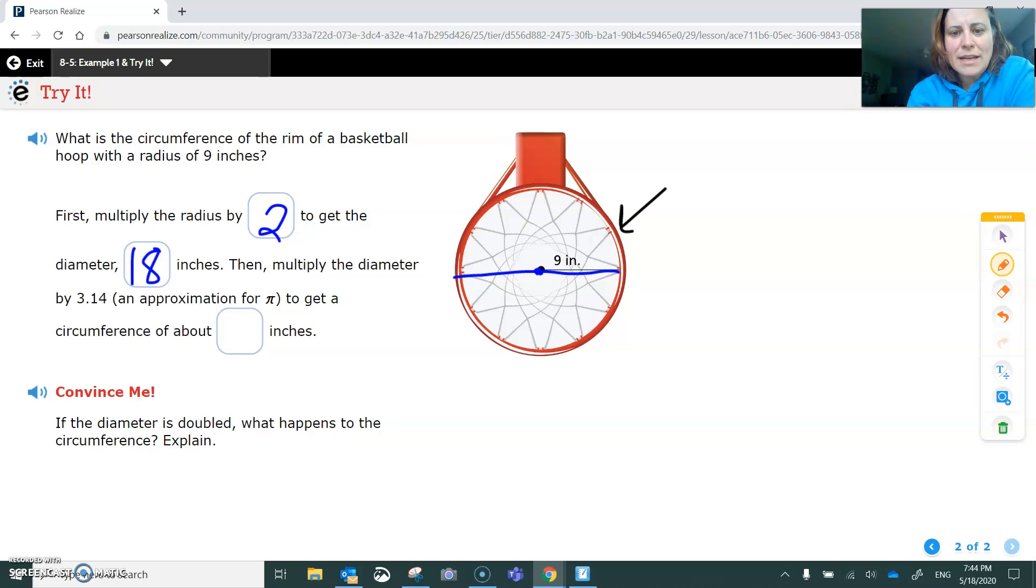Then you multiply that number by a little more than 3 to get the circumference. So the formula is, there's two formulas actually, 2πr or you could say the circumference is πd.